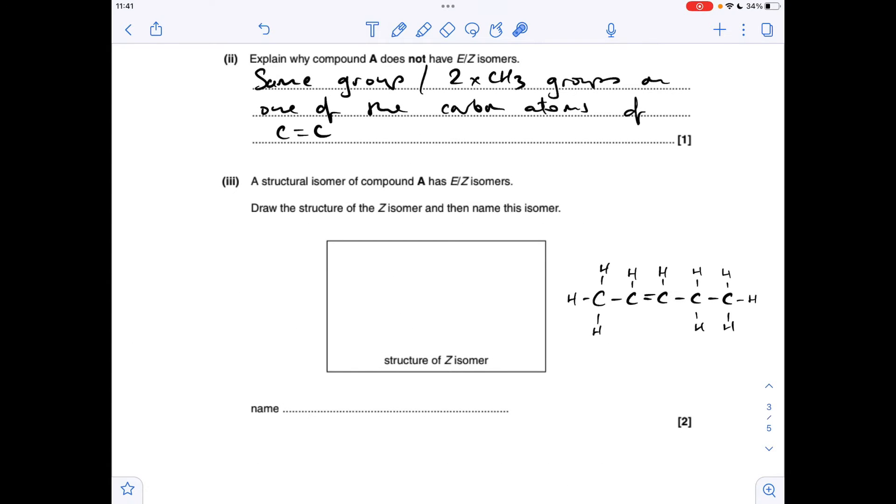And the next part, we've got to talk about a structural isomer of compound A that does show EZ isomerism, and we've got to draw the Z isomer. So the isomer in question is pent-2-ene. Now, obviously, the way this structure's been drawn, I've done it deliberately, is to show that you can't really tell whether this is the E or the Z isomer. So what we need to do is focus on that C=C double bond. To make it the Z isomer, I need to put the priority groups on each carbon on the same side of the C=C double bond. On this carbon here, the CH3 takes priority.